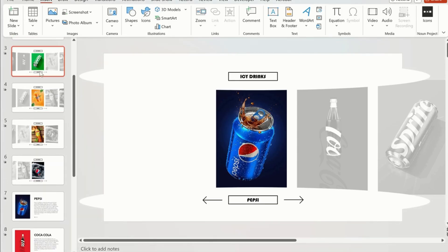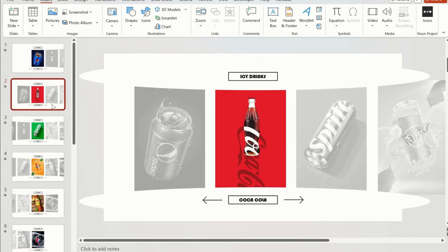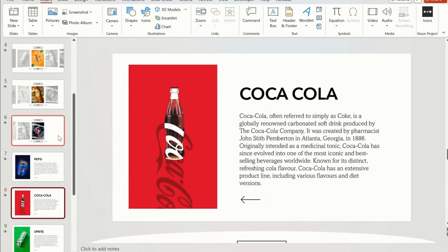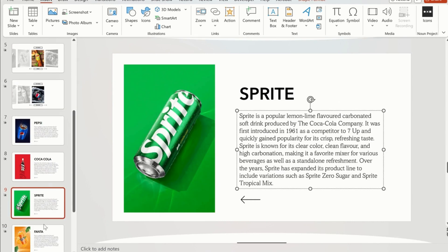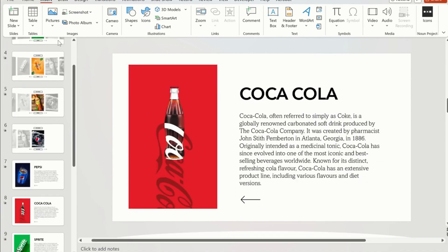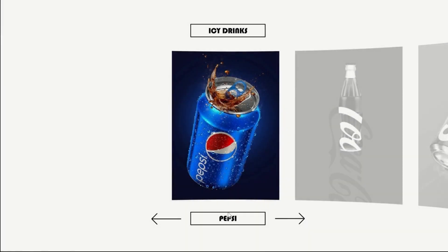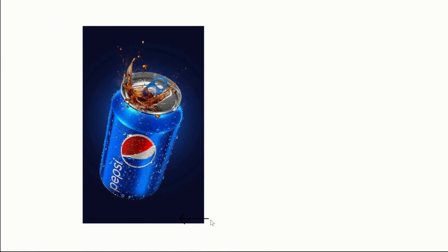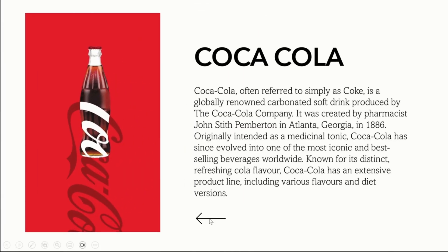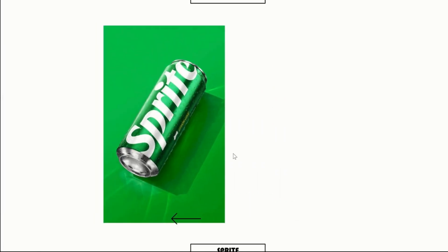To save your time, I have created all other description slides using the same method applied to the first three slides. You will notice that I did not remove the ellipse shape from any of the slides — this is because of the Morph transition animation effect, which will carry over from the carousel effect to the description slide, creating a dynamic transformation when clicking on an image to shift to its description slide.